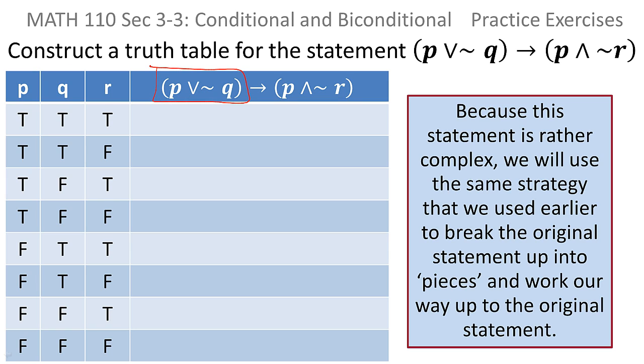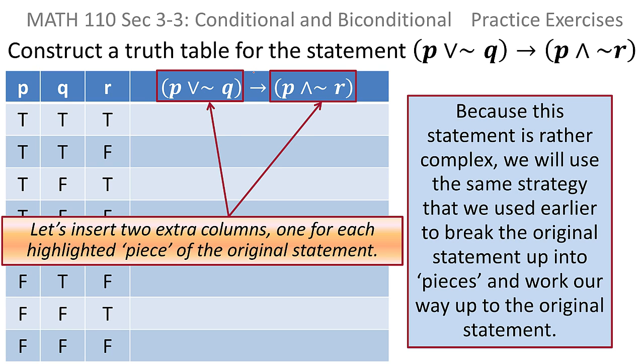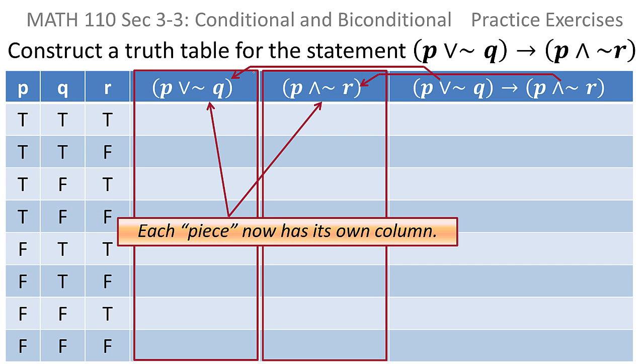So in this case, I'll have this piece, which is an OR, and this piece, which is an AND. And as before, I'll insert two columns that have those two pieces, work on them separately and then put it back together.